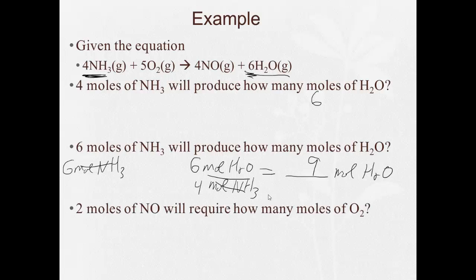2 moles of NO will require how many moles of O2? Well, we're going to do the same thing we did before. Do what you want over what you got. We look here. Moles of O2, 5 because that's what's in front of the oxygen. Moles of NO, 4 because that's what's in front of the NO. So, 2 times 5 divided by 4. And we get 2.5 moles of NO.